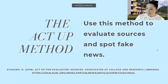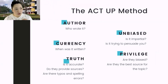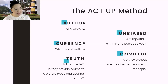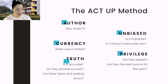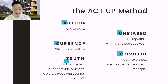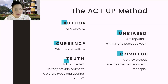Let's take a look at the elements. A is for Author — who wrote it? C is for Currency — when was it written, is it up to date? T is for Truth — is it biased, is it accurate, do they provide sources, is there a list of references, are there typos or spelling errors? U stands for Unbiased — is it impartial or is it trying to persuade you, what is the motivation of the author? And P stands for Privilege — are they biased, are they the best source for the topic, and who is missing from the conversation?